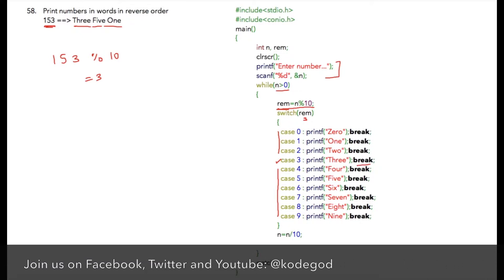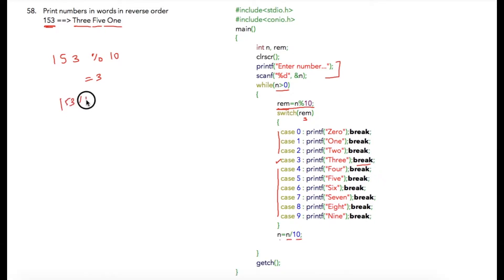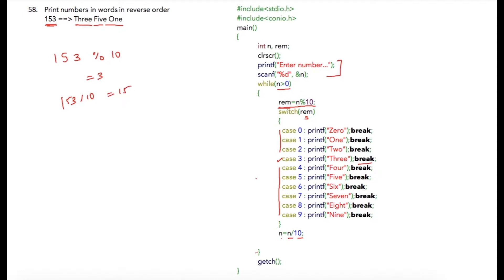Once it completes, we are dividing n with 10. So from 153, when we divide it by 10, we get 15. Program controller will go back at the top again. Again the same condition will be checked. In this case, this time it will be 15 greater than 0, which is a true condition.